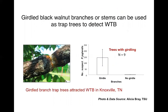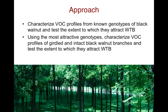We do know that the beetles are attracted to volatiles of girdled branches. These are data from Alicia Bray at Tennessee State — she girdled branches of black walnut and reared beetles from those girdled branches, and found that far more beetles were collected from girdled versus un-girdled branches. So knowing that they're attracted to girdled branches, our approach was to identify those compounds from girdled branches that might be attractive to adult beetles.